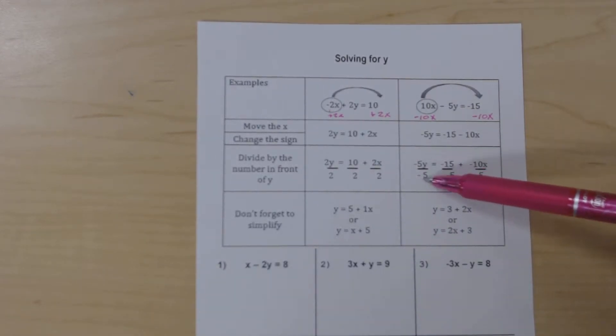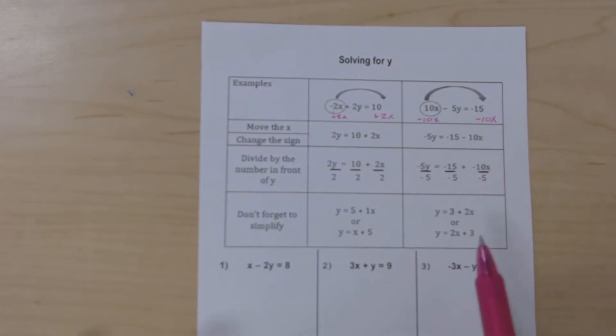So the negative 5s cancel. We're left with a y. Negative 15 divided by negative 5 is positive 3. Negative 10 divided by negative 5 is 2, and those are x terms, so that's a 2x. Put it in our more conventional way of looking at it, which is our slope-intercept form. This is y equals 2x plus 3.